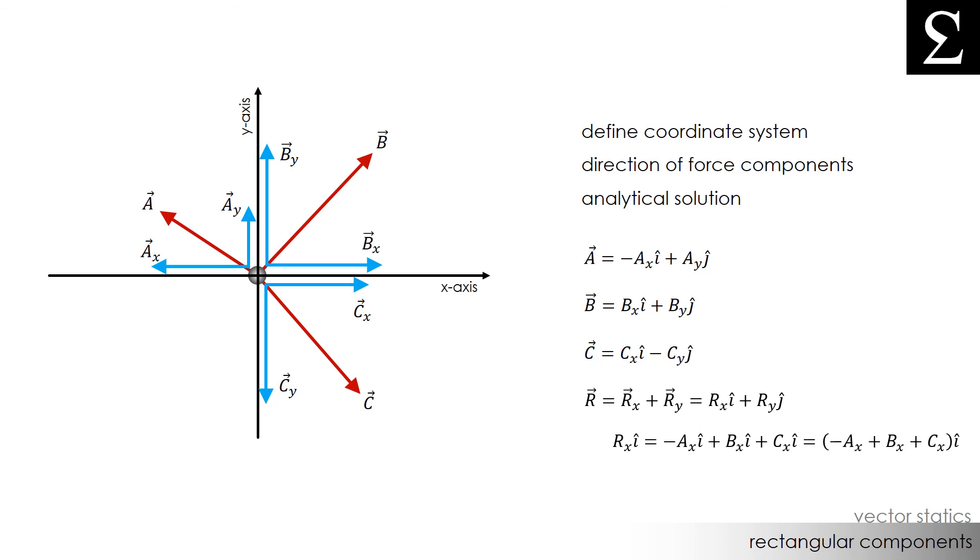In other words, RXI would be equal to the sum of the A, B, and C components acting in the X direction, and RY would be equal to the sum of the A, B, and C components acting in the Y direction.